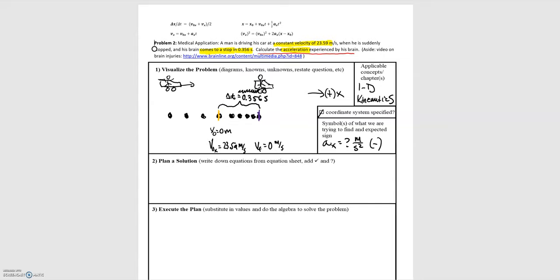So delta t is equal to 0.356 seconds. Now in that same region is where the acceleration is taking place. So that's the quantity that we're looking for. So we'll also put that up here.